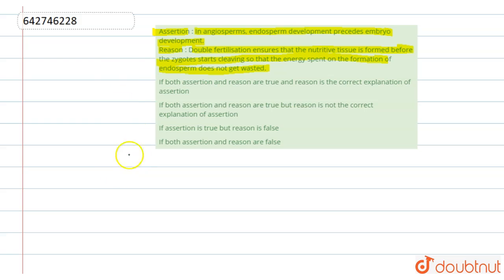During double fertilization in endosperm, one male gamete fuses with the egg to form diploid zygote - syngamy or generative fertilization. This diploid zygote finally develops into an embryo.